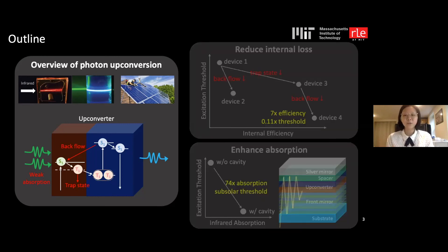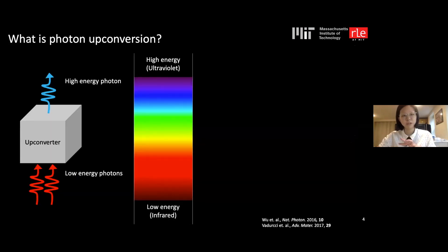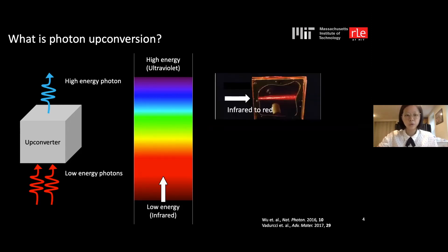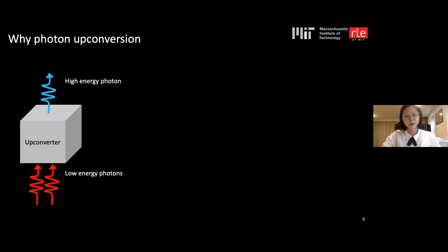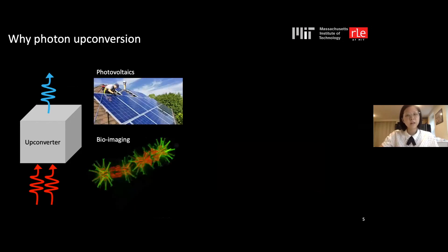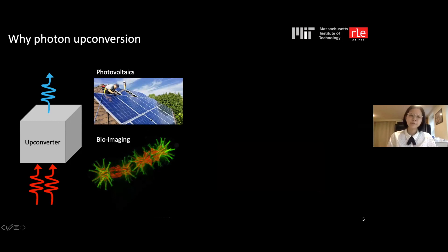Photon upconversion is a process that converts low-energy photons into higher energies — for example, infrared to red, or green to blue. We care about this because upconversion has many applications. If we have an infrared-to-visible upconverter, we can convert the low-energy part of the solar spectrum to higher energies where silicon can absorb, boosting photovoltaic efficiency.